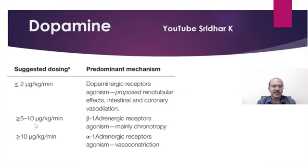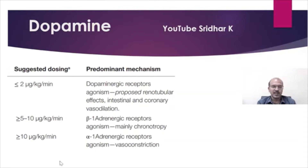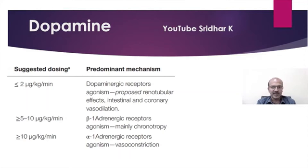At doses above 5 and up to 10 microgram per kg per minute, we have beta-1 adrenergic receptor activation, mainly giving a chronotropic effect. Above 10 microgram, we have alpha adrenergic receptor activation and vasoconstriction, so the effect on blood pressure really starts at more than 10 microgram. We usually don't cross 20 microgram, as vasoconstriction may increase so much that even if blood pressure goes up, peripheral circulation may drop.